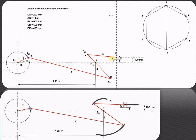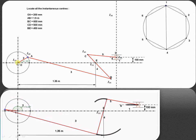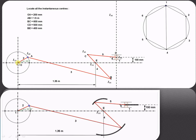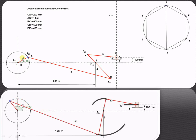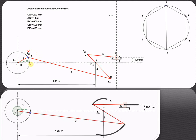There are 6 links total, giving us 15 instantaneous centers of rotation. Links 1 and 2 form ICR I12, which is a fixed ICR since link 1 is the fixed link. Links 2 and 3 are pin jointed at point A, so I23 is a permanent ICR. Links 3 and 4 are pin jointed, forming permanent ICR I34. Since point E is fixed and link 4 is connected to it, links 1 and 4 form a fixed ICR I14.